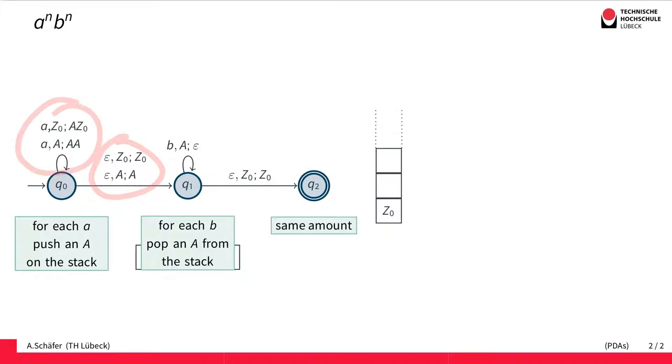At some point we take the choice and change state. In the second state, we pop A's for each B that we read. So the amount of B's is matched against the amount of A's, and if we end up with a more or less empty stack apart from this marker...